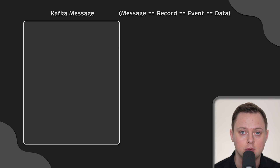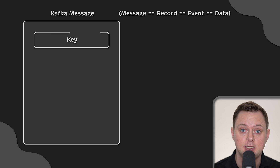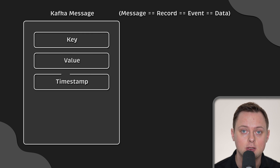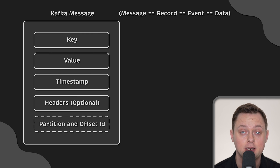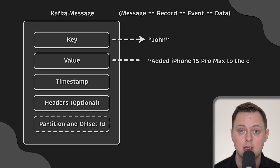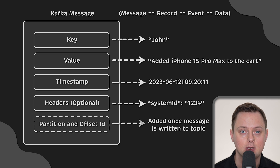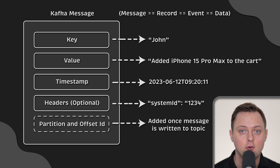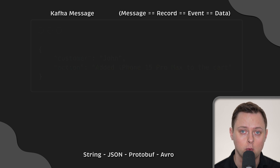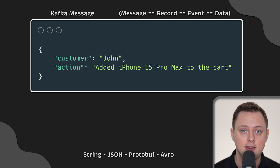When you read or write data to Apache Kafka, you do so in the form of events. An event has a key, value, timestamp, and optional metadata headers. For example, the key can be 'John', the value can be 'added iPhone 15 Pro Max to the cart', and the timestamp is when the message was published to Kafka. Messages, including keys and values, can have any format. The most common are string, JSON, protobuf, and Avro. For example, you may include the name and the event itself in a JSON-encoded message.